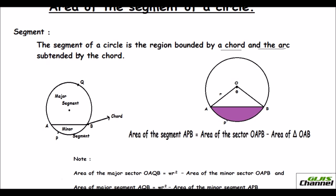For calculating the area of the segment, we don't have any direct approach, but we can use a formula. Instead of calling them major and minor segment, we name them: the minor segment is APB and the major segment is AQB.